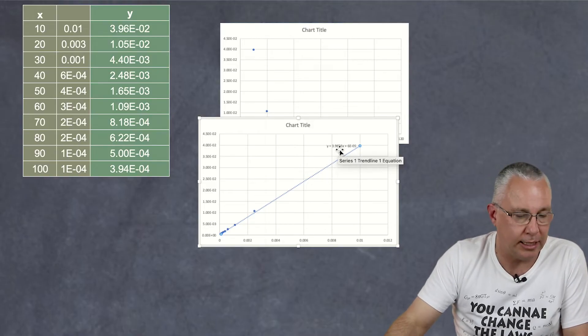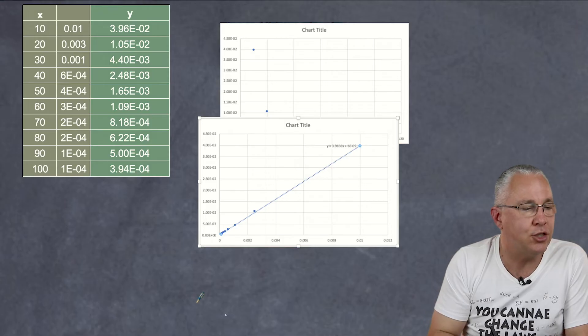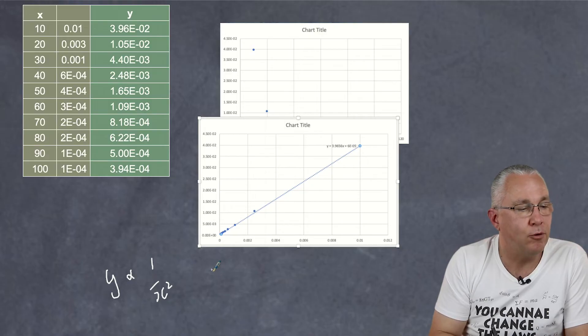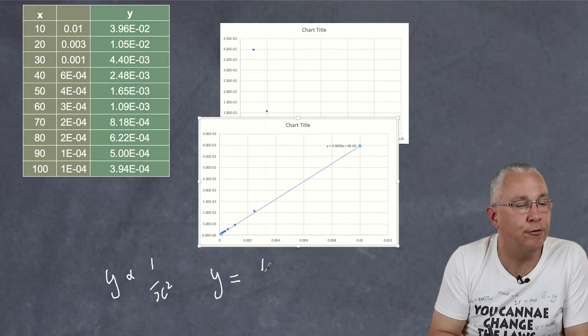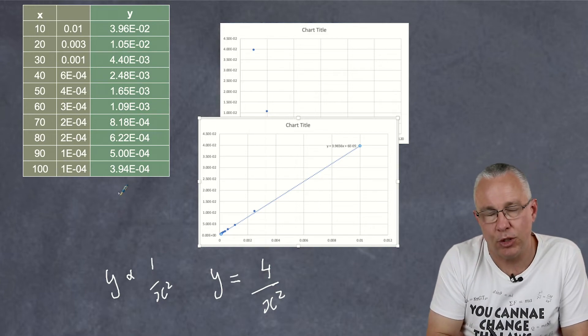And again by adding the trend line to this situation I'm going to find that my value there is practically 4. So what that means is that my relationship is Y is proportional to 1 over X squared and therefore Y is equal to 4 over X squared. And if you did the calculations that's what you would get.